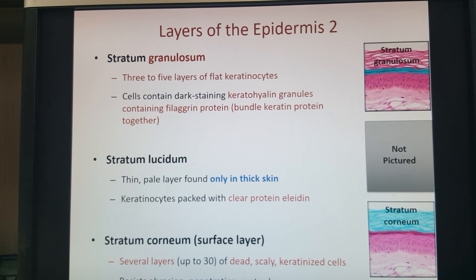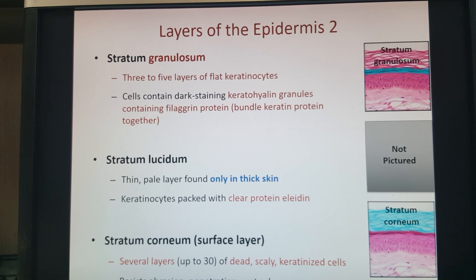The last layer is the stratum corneum, where skin cells have finally given up — there aren't enough nutrients to keep them alive, organelles fail, and they die off. Because of that bundled-up keratin protein arranged by filaggrin, the outer layers remain tough and stay in place. You end up with multiple layers of dead skin cells on the outside of your skin.